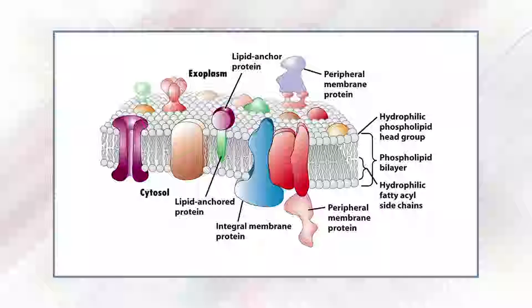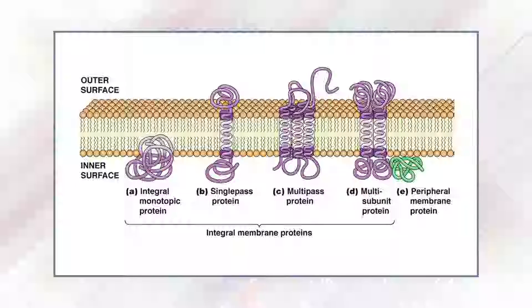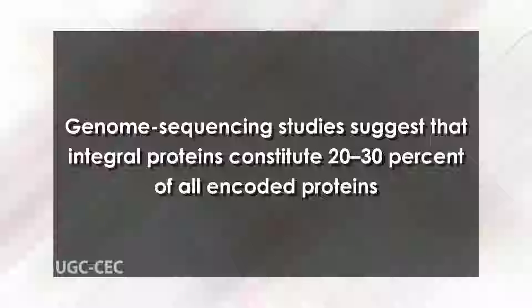Membrane proteins can be grouped into three distinct classes distinguished by the intimacy of their relationship to the lipid bilayer. Integral proteins penetrate the lipid bilayer; they are transmembrane proteins that pass entirely through the lipid bilayer and have domains protruding from both the extracellular and cytoplasmic sides. Some integral proteins have only one membrane-spanning segment, whereas others are multi-spanning.